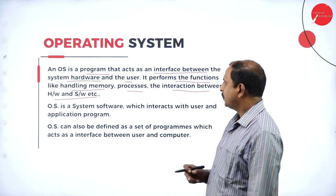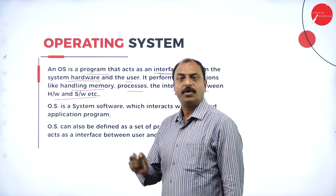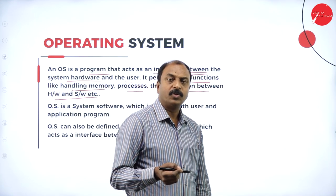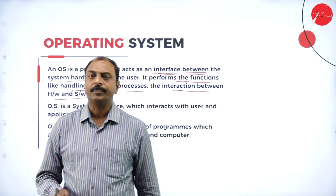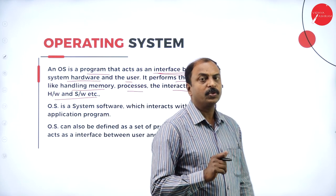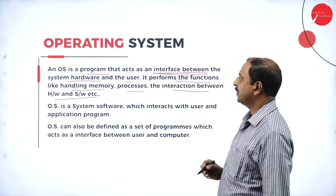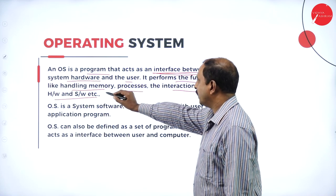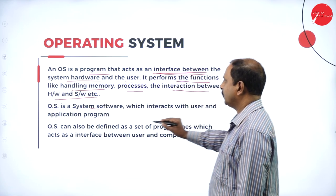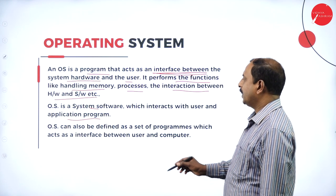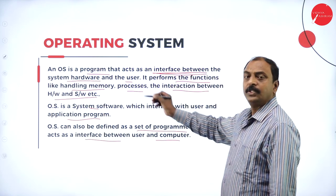In other words, the OS is an interface between the hardware and the user. The hardware is the computer, and over it we load the operating system (system software), then on top of it we install application software, which is used by the user. It can also be defined as a set of programs which acts as an interface between the user and the computer.